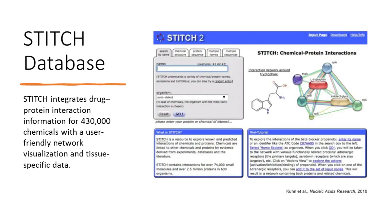Stitch is a database of known and predicted interactions between chemicals and proteins. The interactions include direct physical and indirect functional associations. The database integrates drug-protein interaction information for 430,000 chemicals with a user-friendly network visualization and tissue-specific data. Interactions in Stitch are derived from five main sources: genomic context predictions, high-throughput lab experiments, co-expression, automated text mining, and previous knowledge in databases.